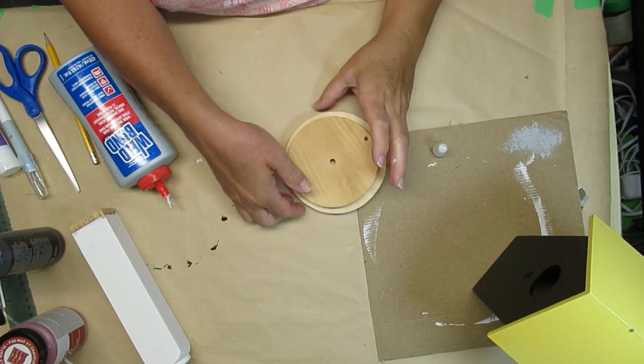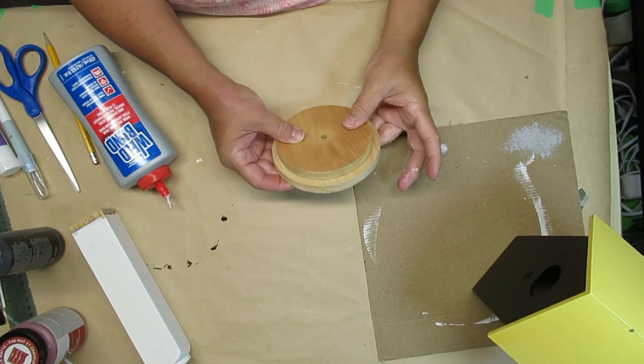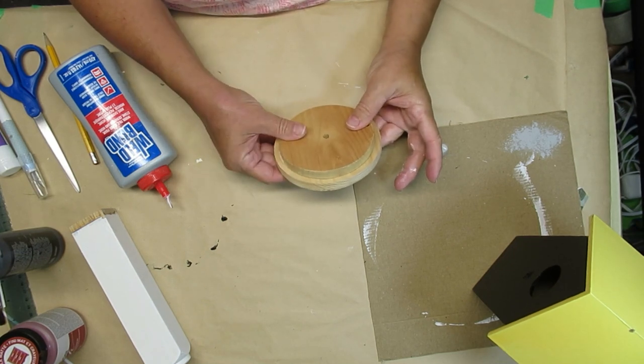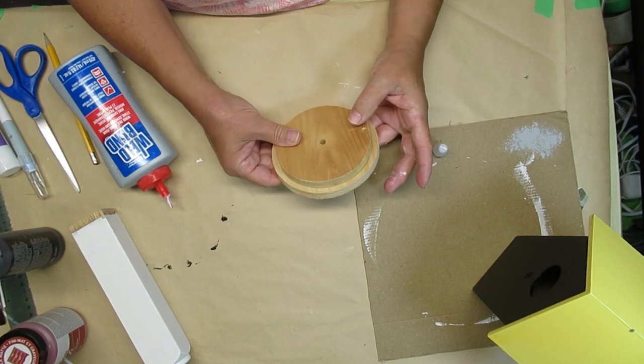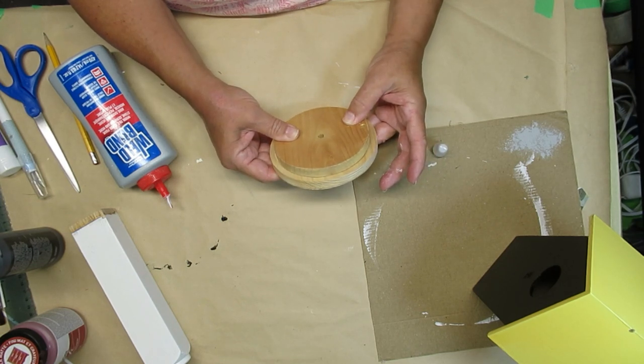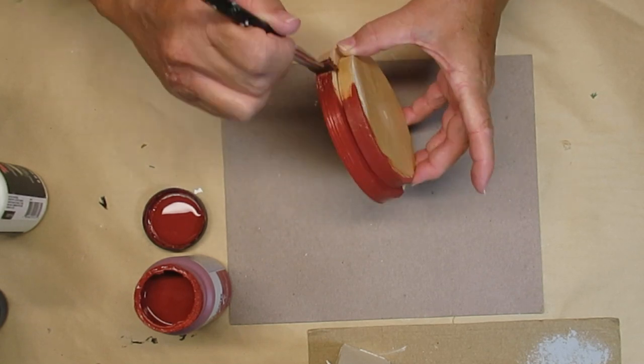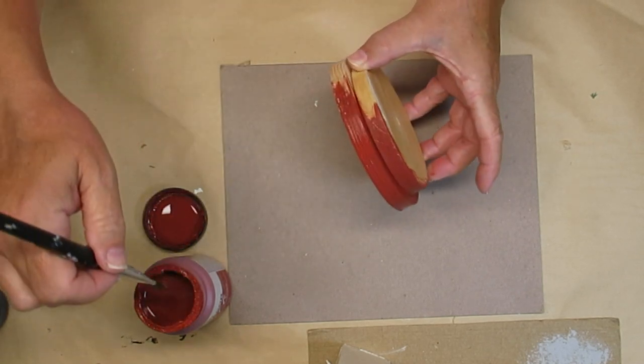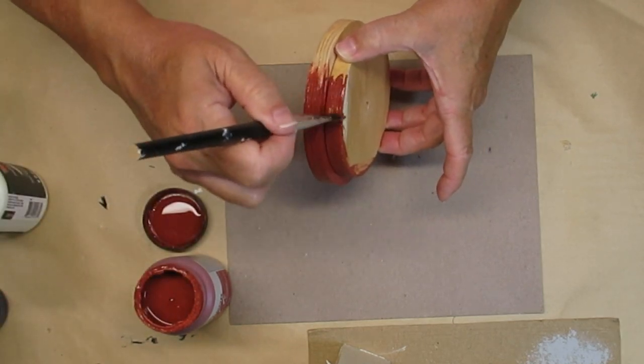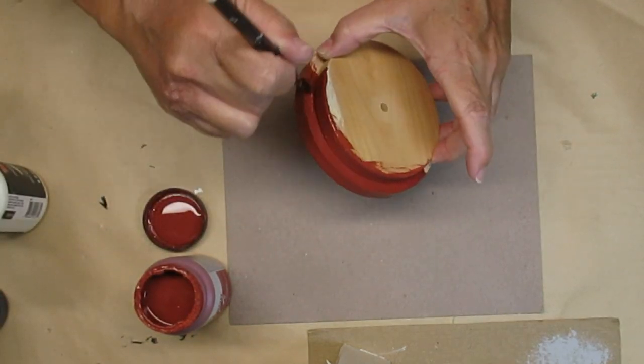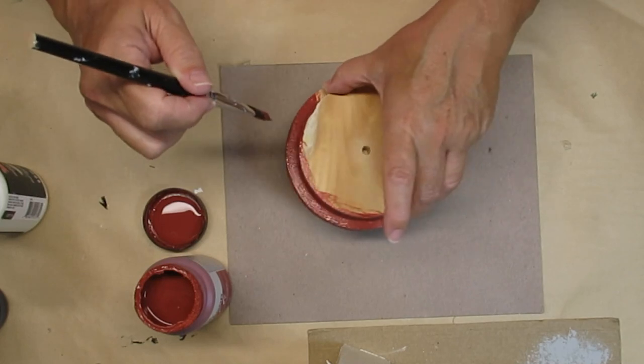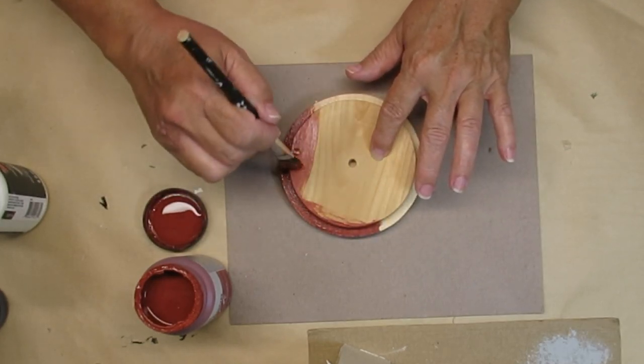I'm gluing together two of these rounds, one is a little bit smaller than the other, and that's going to become the base of the birdhouse. Once these are clamped together and dried, then I'm going to give them a coat of this rustic red color. I believe it's called Pioneer Red, so it's sort of a rusty red color and I thought that would be really great for a rustic farmhouse look.